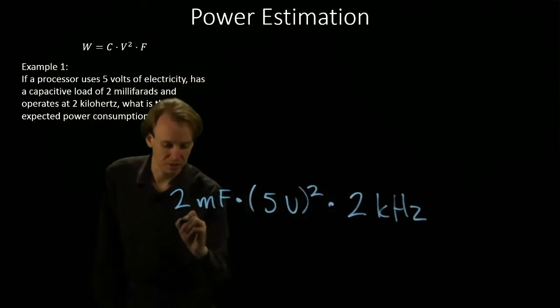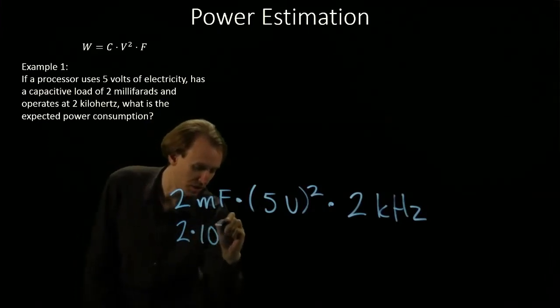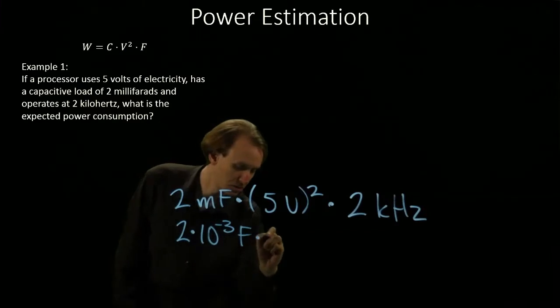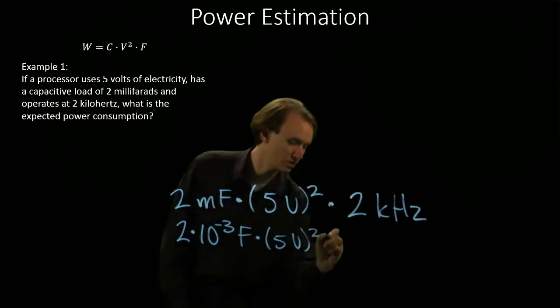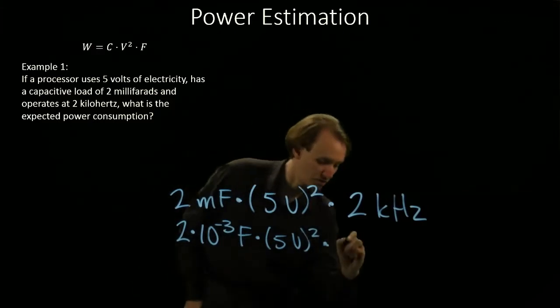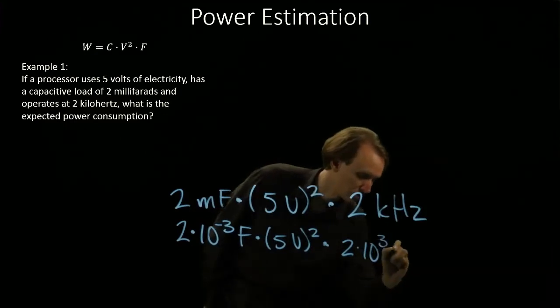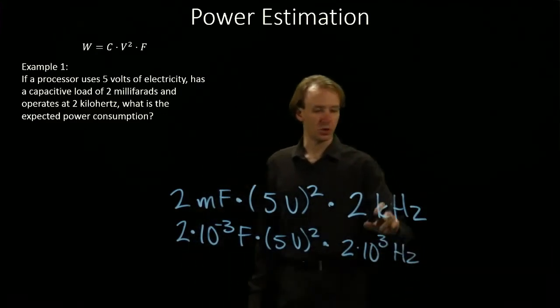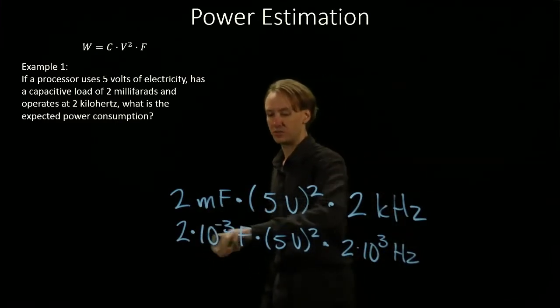We can change these to be 2 times 10 to the minus third farads times 5 volts squared times 2 times 10 to the third hertz. So our kilo became 10 to the third, and our milli became 10 to the minus third.